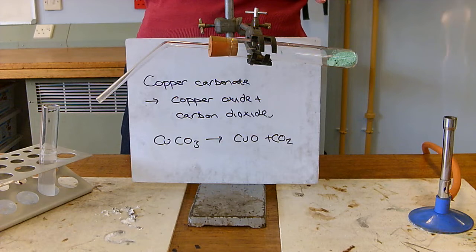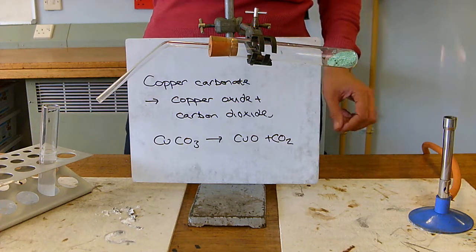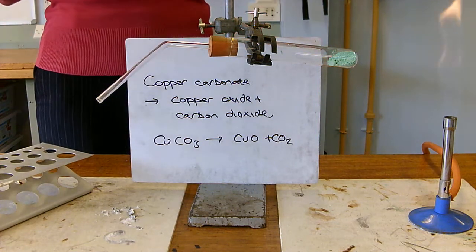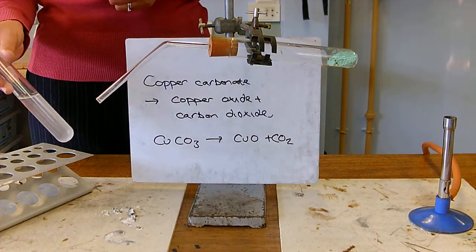So, I've got my copper carbonate in my boiling tube and I'm going to heat it up. We'll know reactions happen because there's a colour change and we're going to make a gas. We can test for carbon dioxide using lime water. So, I've got some here.